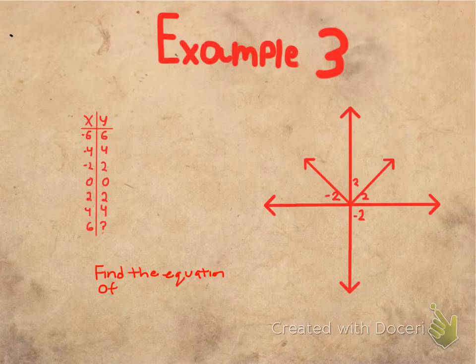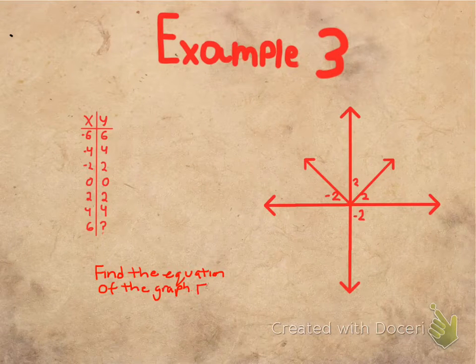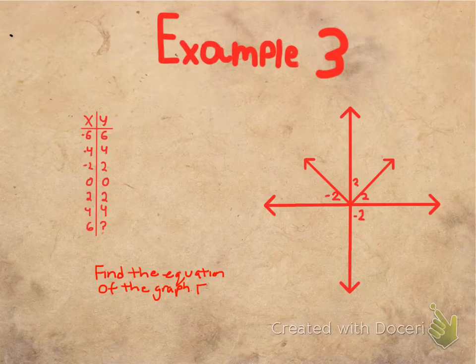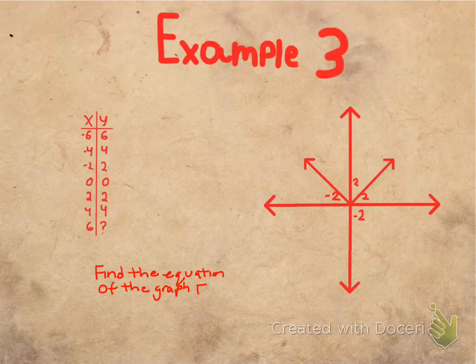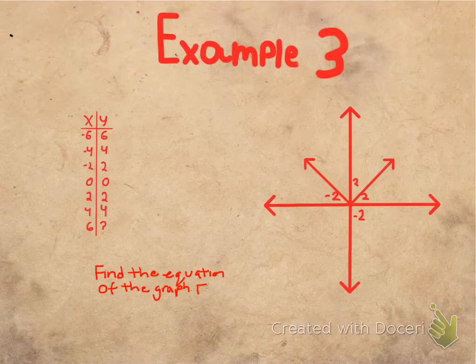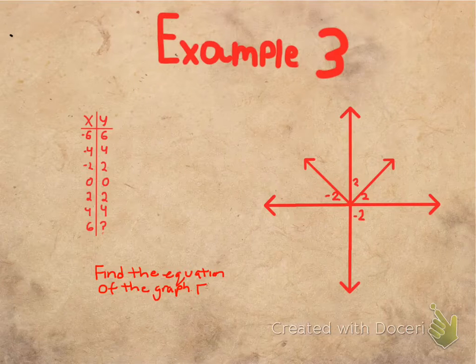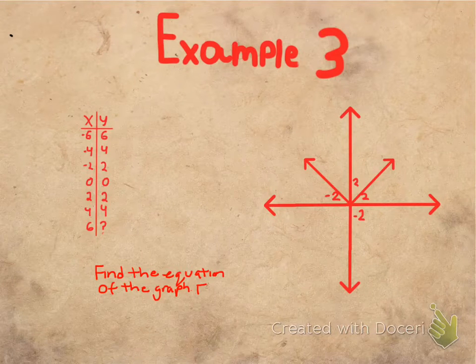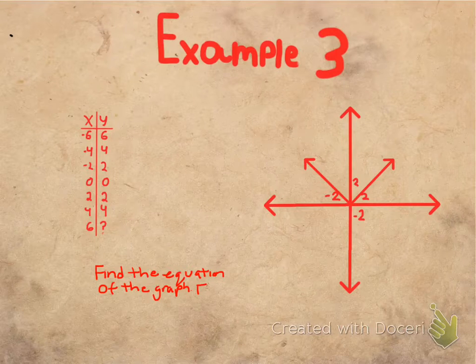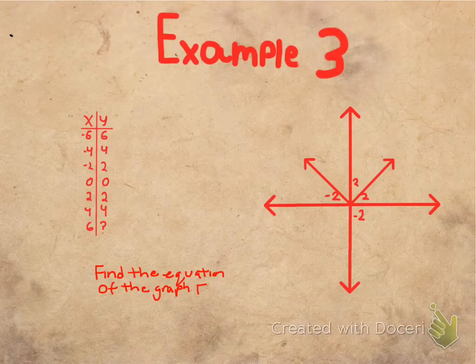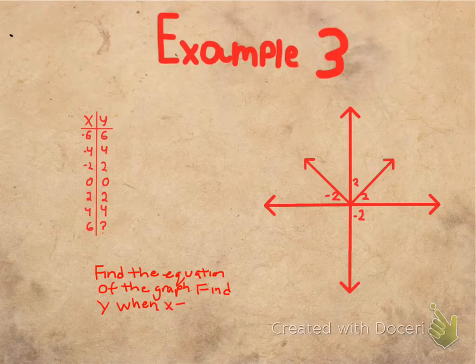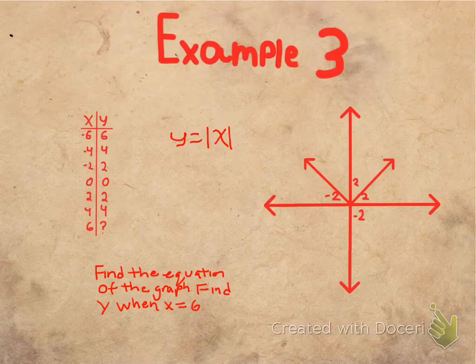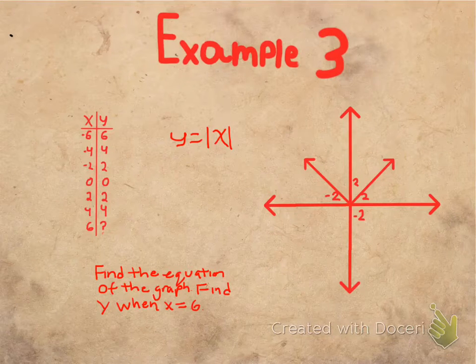So now we need to find the equation of the graph, and hopefully you know a bit about absolute value equations. So when there's an absolute value equation, we have to find the opposite of the x if it's a negative. If it's a positive, we just leave it alone. So when it says negative six for x and six for y, we're using this equation here: y equals absolute value of x. This is the parent function for each and every absolute value equation.